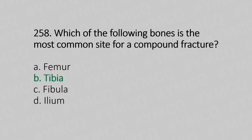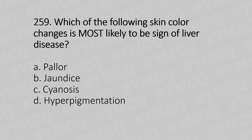Question 259: Which of the following skin color changes is most likely a sign of liver disease? Option A: pallor. Option B: jaundice. Option C: cyanosis. Option D: hyperpigmentation. The answer is Option B, jaundice.